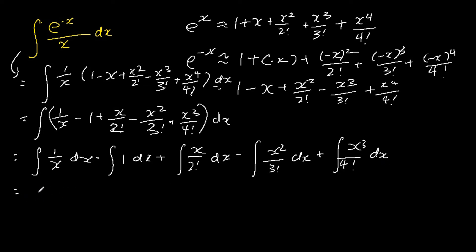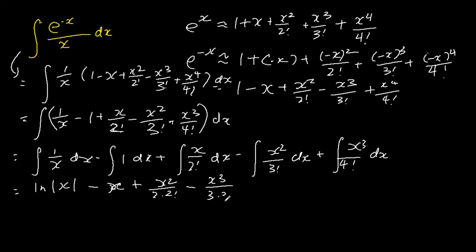The integral of 1 over x dx is ln absolute x. The integral of 1 dx is x. The integral of x over 2 factorial gives x squared over 2 times 2 factorial. The integral of x squared over 3 factorial is x cubed over 3 times 3 factorial. And lastly, the integral of x cubed over 4 factorial dx is x to the power of 4 over 4 times 4 factorial, plus c.